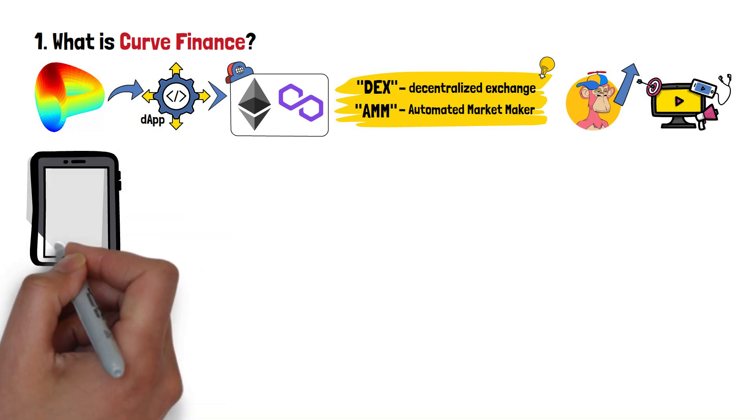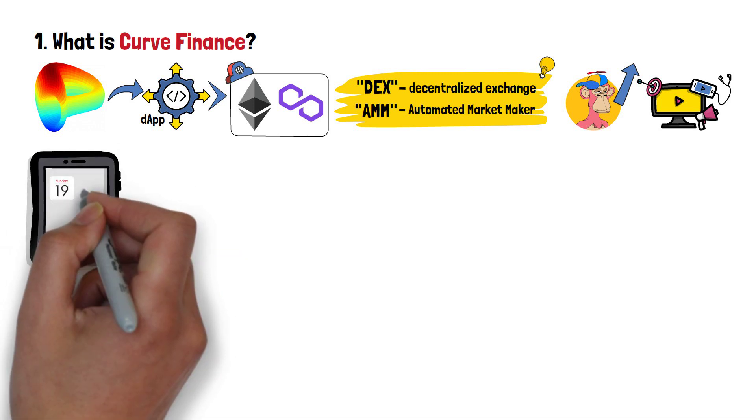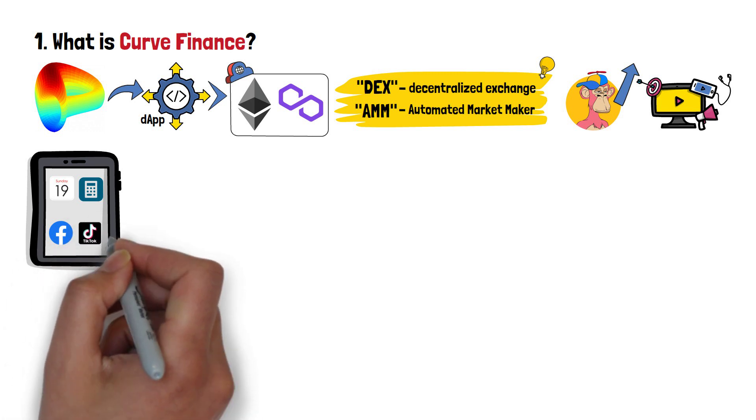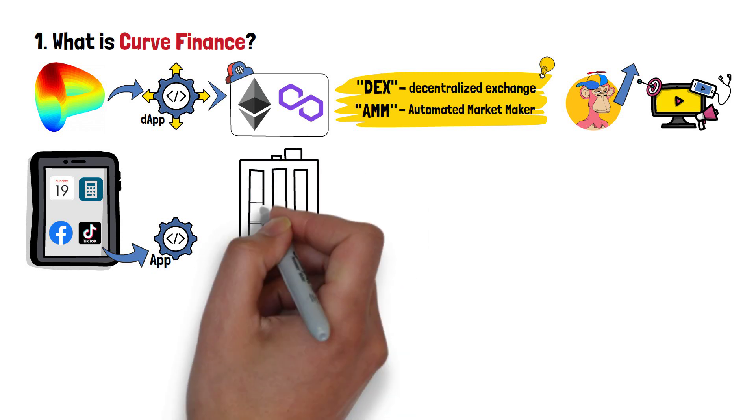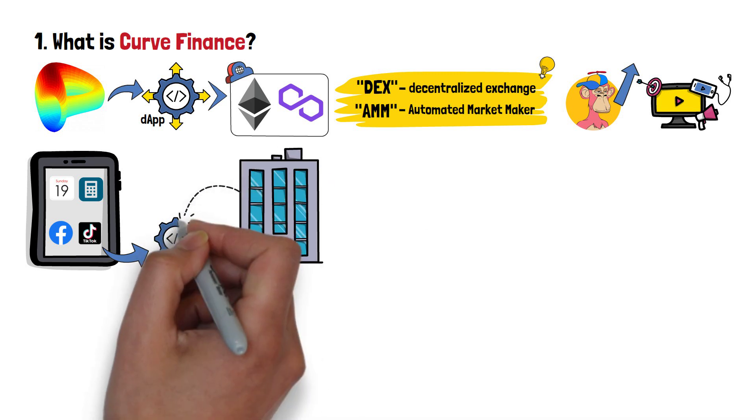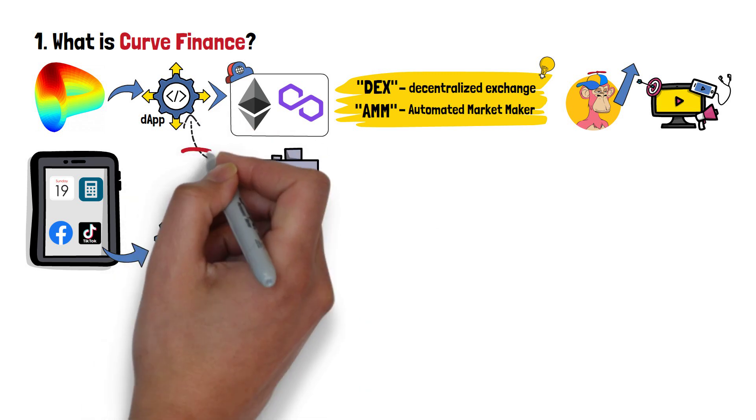So, on your phone, you'll likely have a variety of different apps. A calendar, a calculator, Facebook, TikTok, and so on. Just like all these applications, dApps are kind of the same. The only difference is that dApps are decentralized, meaning they're not owned by a single company or corporation.